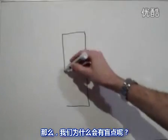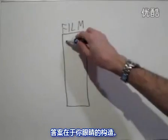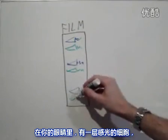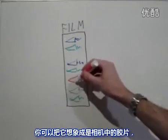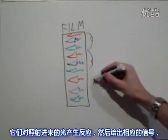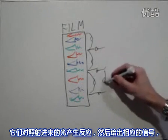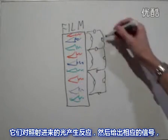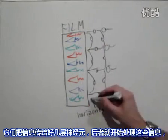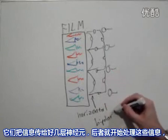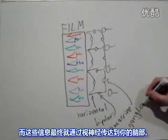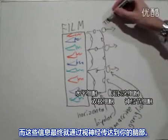So why do we have blind spots? The answer lies in the structure of your eye. Inside your eye, there's a layer of photosensitive cells that you can essentially think of as the film. They respond to incoming light and give out signals which allow you to see. They communicate with several layers of neurons that begin to process this information, and the information is then sent out to the brain through the optic nerve.